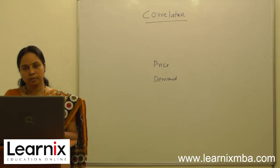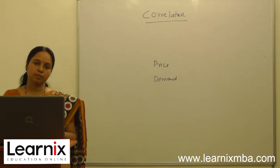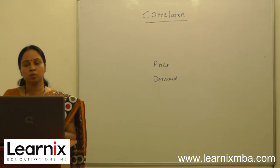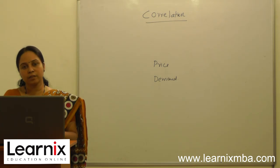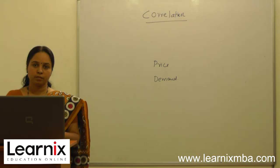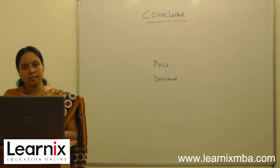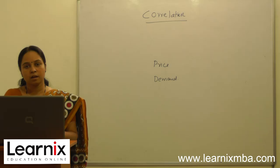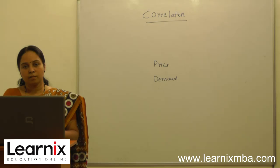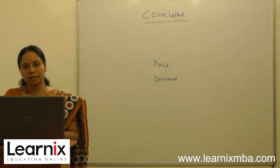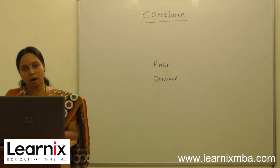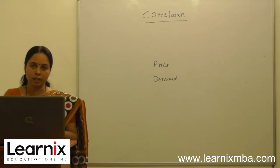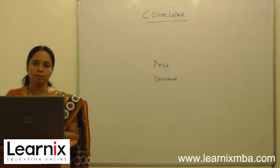If you are studying the correlation between only two variables, it is called simple correlation. For example, studying the correlation between height and weight of a group of students is simple correlation. In multiple correlation, we study the relationship between more than two variables — for example, price, demand, and supply of certain commodities. In partial correlation, we study the relationship between two variables at a time, keeping the effect of all other variables constant, without the influence of other variables.